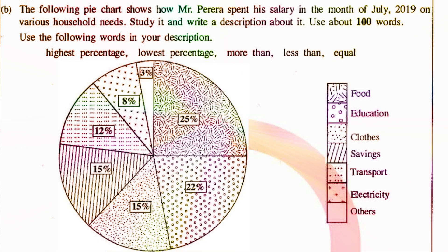If you have a question about this, the following pie chart shows how Mr. Pereira spent his salary in the month of July 2019 on various household needs. Study it and write a description about it. Use about 100 words. Use the following words in your description: highest percentage, lowest percentage, more than, less than, equal.